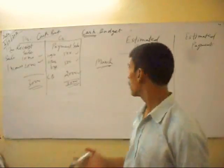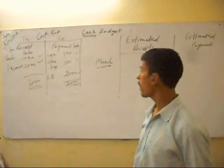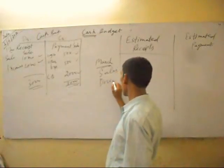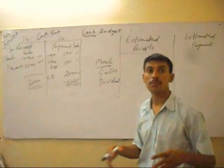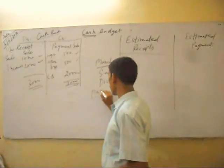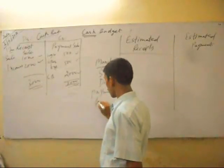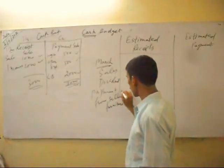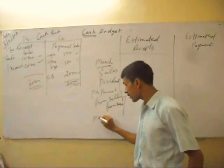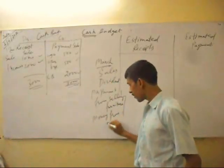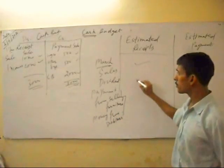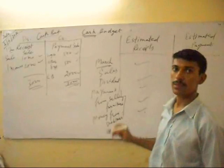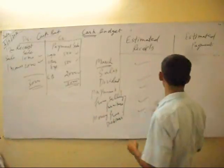We have to show all the estimated figures. For example, in March, the main receipts we show are: sales income, dividend income, proceeds from selling furniture, and money received from debtors.